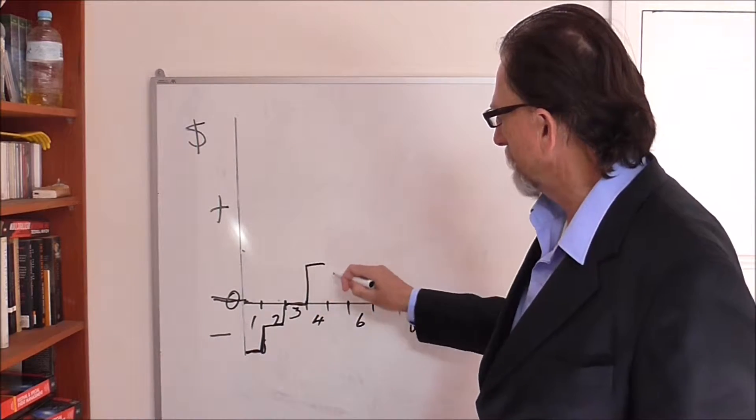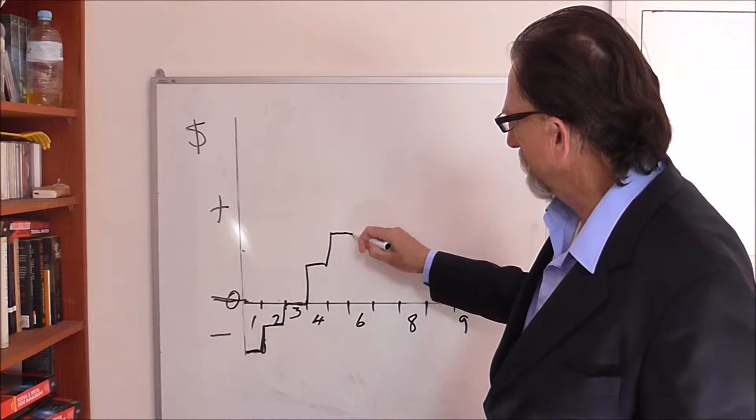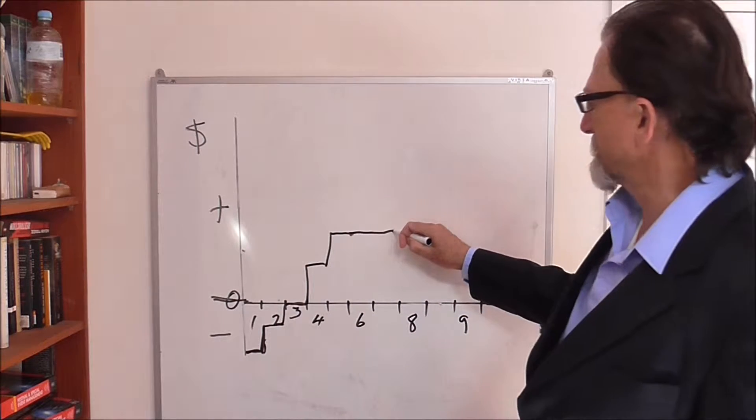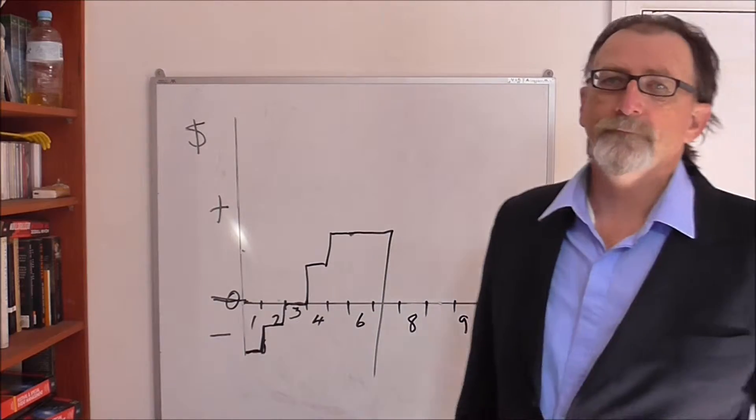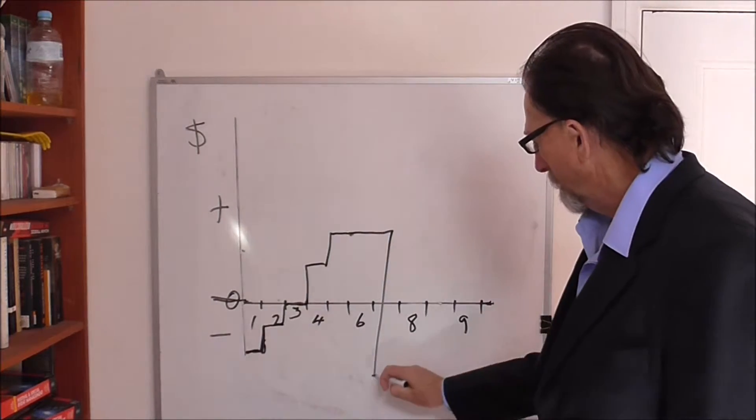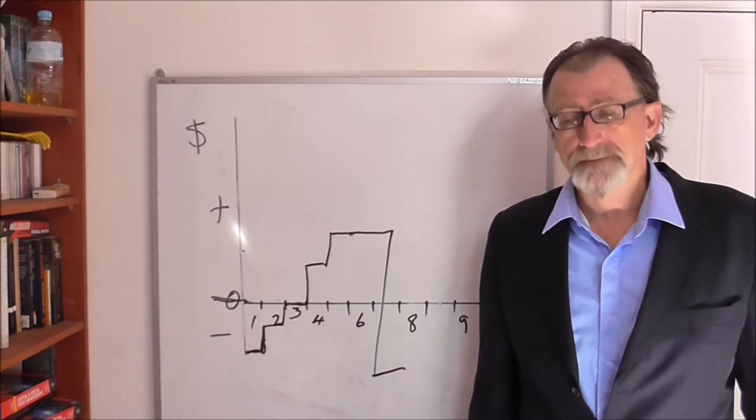So by year four, it's actually doing quite well. Five, even better, probably stays constant for a while and then suddenly drops. In one year, it suddenly makes no money. Now that could be for a variety of reasons.